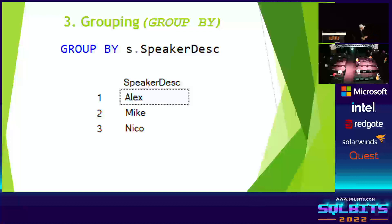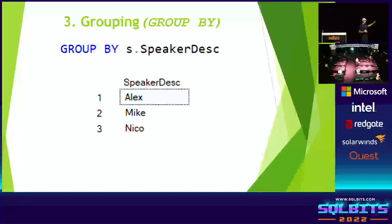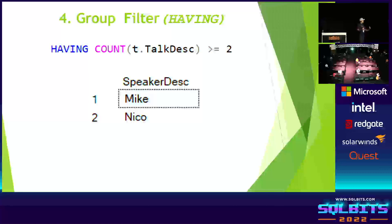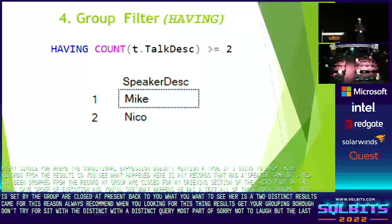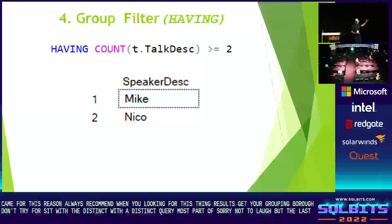My GROUP BY clause forms the third part of SQL Server's order of execution. It takes all those rows, groups them into sets defined by the GROUP BY clause, then presents those sets back to you as a distinct result. I always recommend when looking for distinct results, get your grouping right — don't force it with a DISTINCT query. After grouping, there is a group filter: the HAVING clause. Think of HAVING as a filter on your groups. Once you have a GROUP BY, SQL Server no longer looks at individual rows — it looks at sets of rows. Here we're filtering to speakers with two or more talk descriptions, leaving only two speakers.